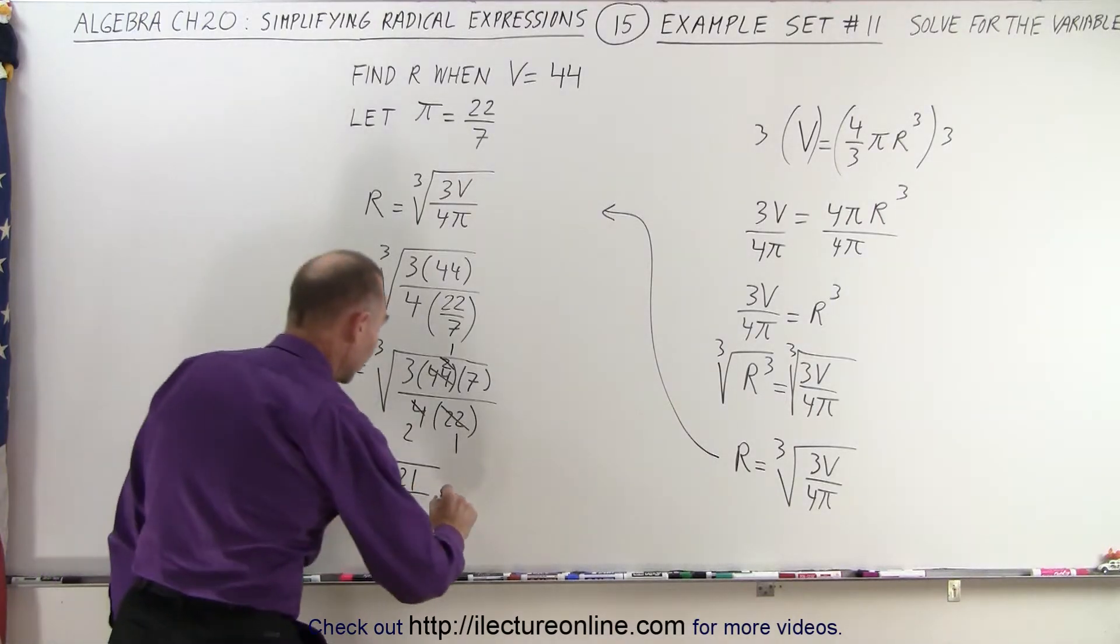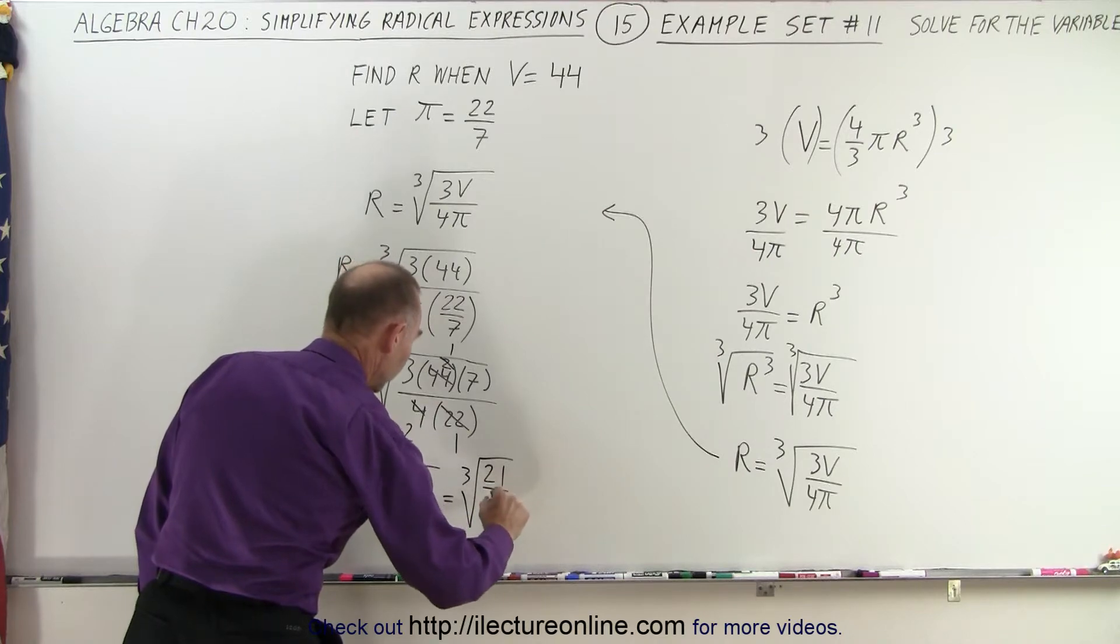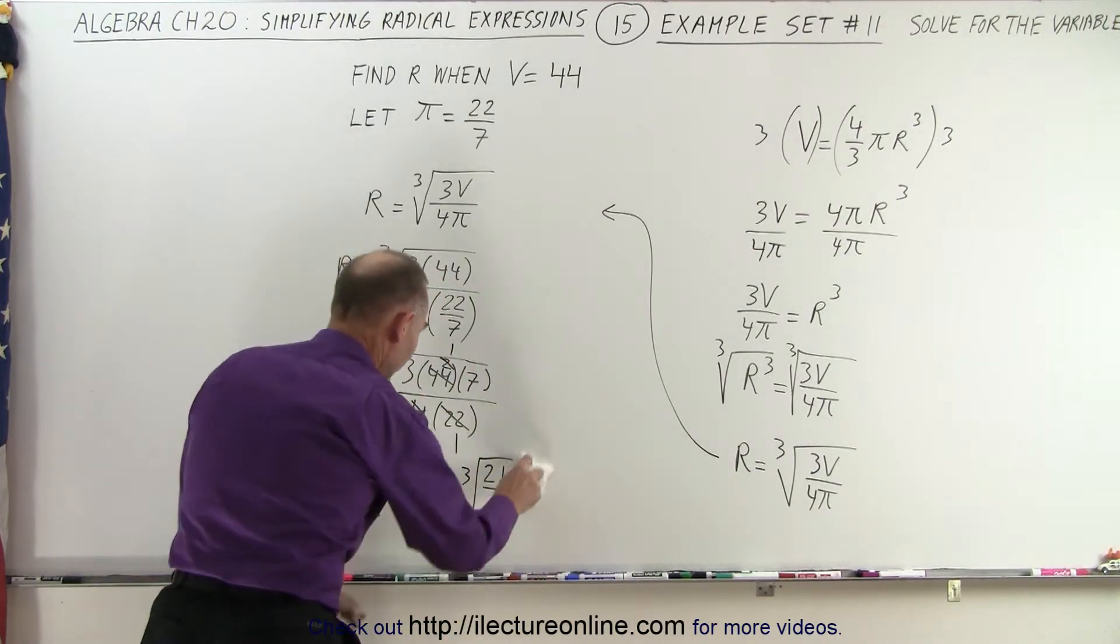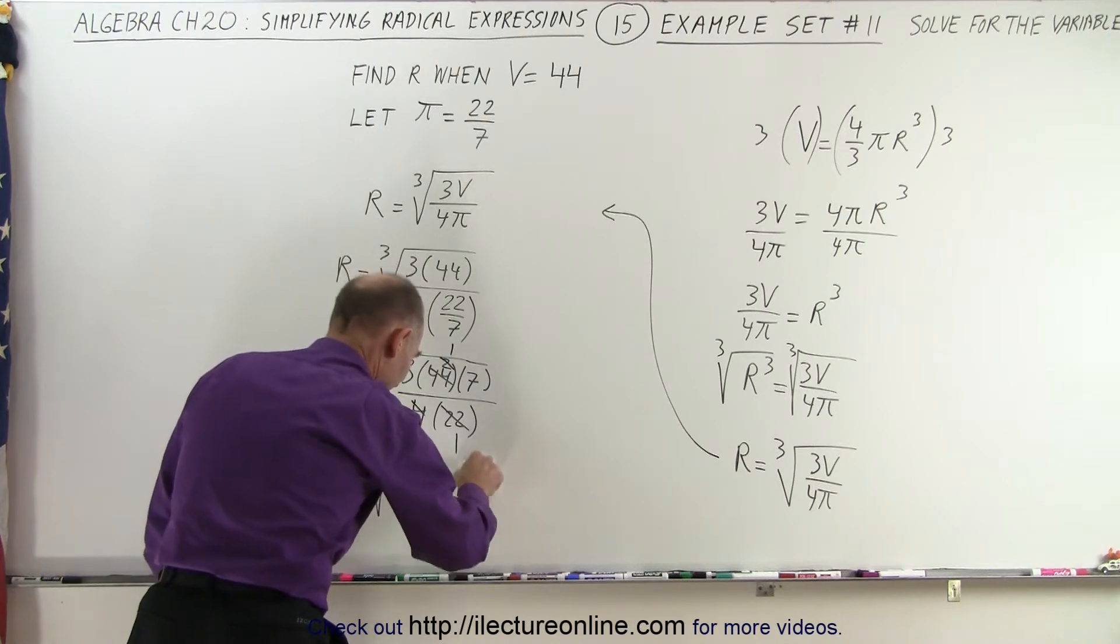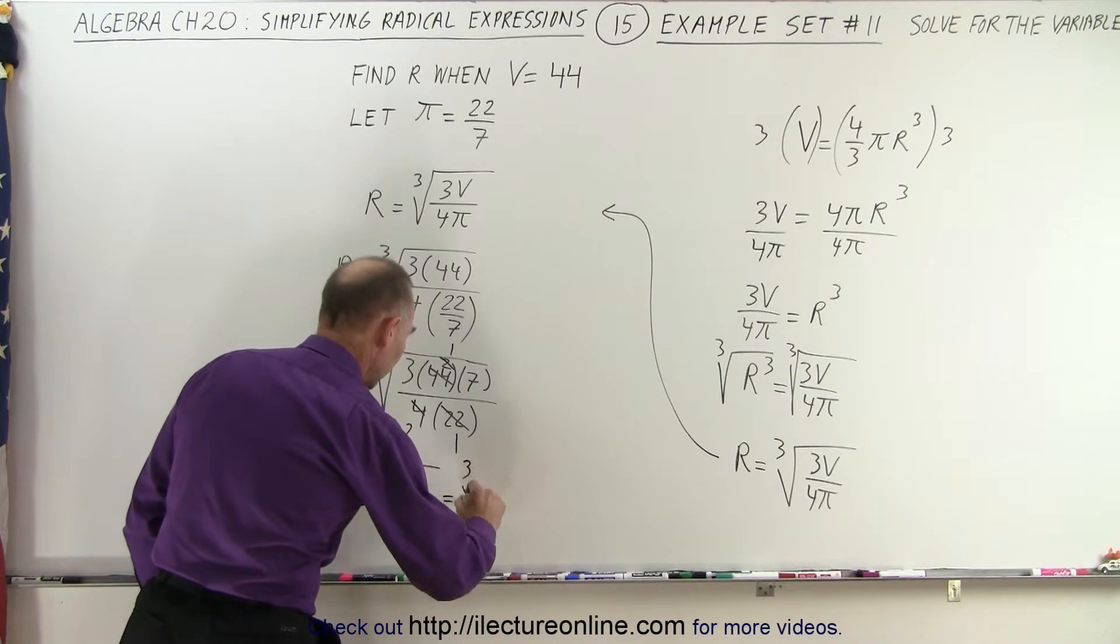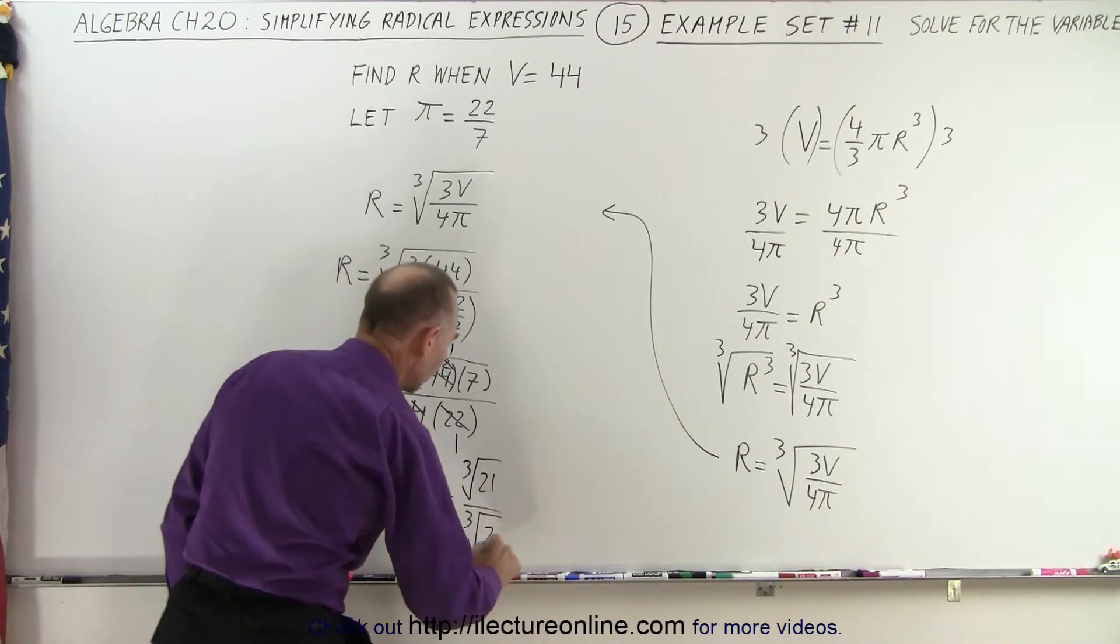Now this can be written as the cube root of 21 over... Oop, actually that's not what I wanted to do. Let me reset myself here. What I want to do is separate it as a cube root of 21 in the numerator, divided by the cube root of 2 in the denominator.